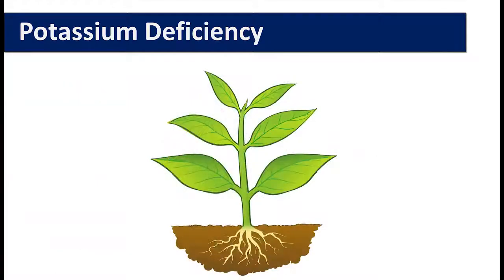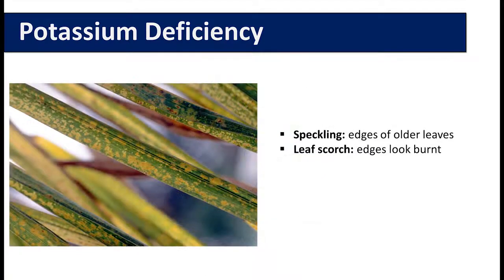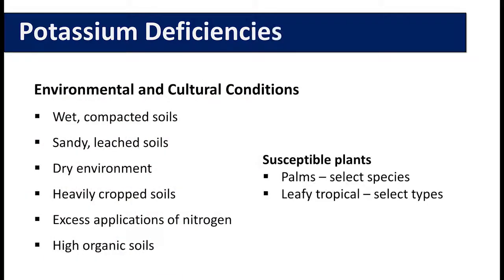The oldest leaves will become yellow, speckled, or necrotic, specifically on the leaf margins, again mimicking more of the drought stress or salt stress. Leaf scorch can also occur, looking as if the plant leaves have been burned.